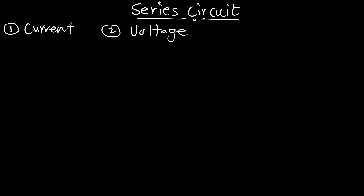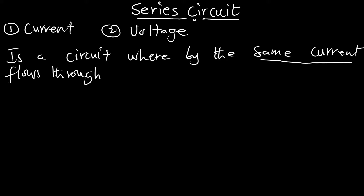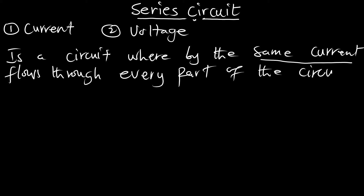A series circuit is any circuit whereby the same current flows through every part of the circuit. Anytime you have a circuit whereby the same current flows through every part of the circuit, it is a series circuit. So now we have the idea of the same current flowing through every part and through every element of the circuit.